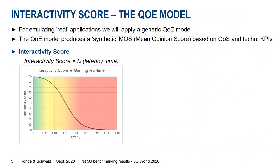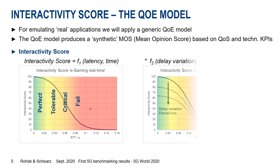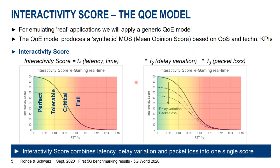These three components are condensed into the interactivity score. For latency, you see the interactivity score on the y-axis over the roundtrip time, forming an S-curve with regions labeled perfect, tolerable — above roughly 70% interactivity score — then critical, and finally failed. The second and third components, delay variation and packet loss, are figures between 0 and 1 that linearly scale down the interactivity score curve from latency. The interactivity score thus combines latency, packet delay variation, and packet loss into a single test and a single score.